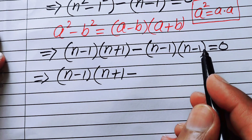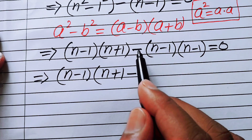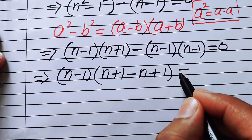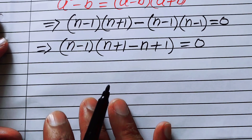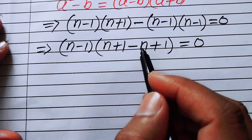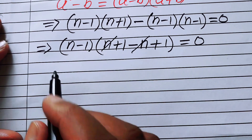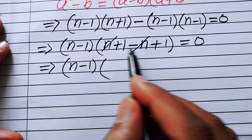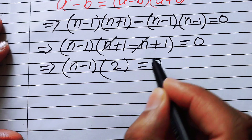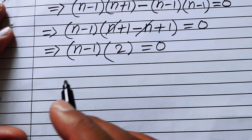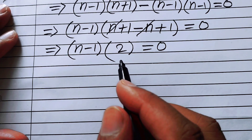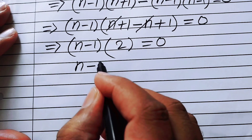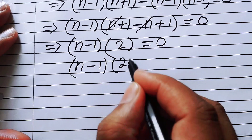Taking n minus one from the second term leaves minus n minus one. We multiply this minus sign through both terms and get minus n plus one, so the bracket becomes n plus one minus n plus one equals zero. Simplifying, minus n and plus n cancel, and you get n minus one times two equals zero.